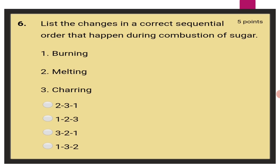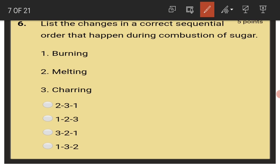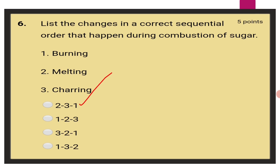List the changes in a correct sequential order that happened during combustion of sugar. That is melting, charring, burning. The answer is 2-3-1: melting, charring, and burning.